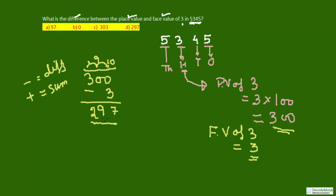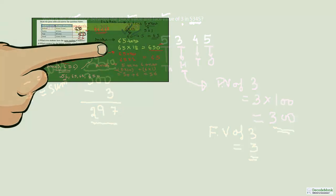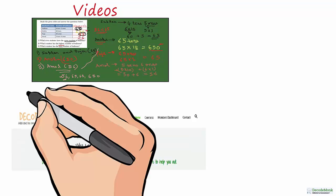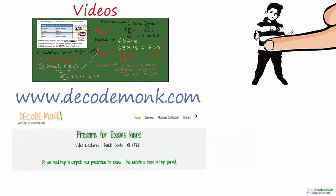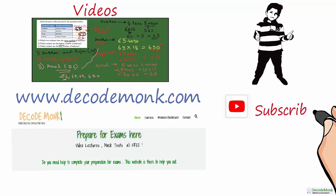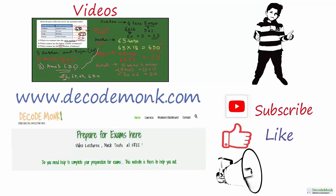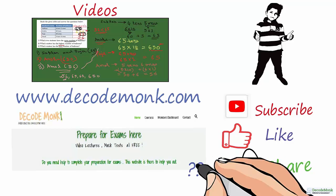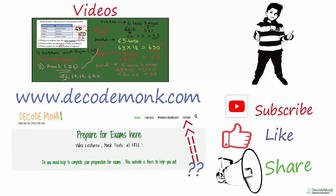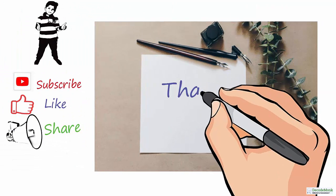So, 200, 9 tens and 7 ones, that is 297 is the answer. So, the answer is 297 which is option D. Thank you for your patience.